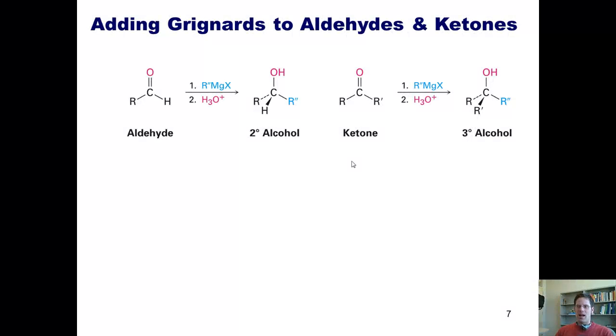We can add Grignard reagents to aldehydes, which will convert them into secondary alcohols. By comparison, adding Grignard reagents to a ketone yields a tertiary alcohol.